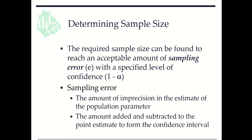The required sample size can be found to reach an acceptable amount of sampling error, namely e, with a specified confidence level. Sampling error measures the amount of imprecision in the estimate of the population parameter. The amount added and subtracted to the point estimate to form the confidence interval is the sampling error.